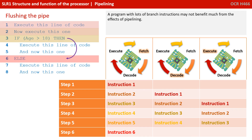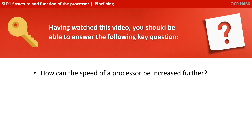While pipelining does improve the efficiency of fetching, decoding, and executing processes, a program which contains lots of branching instructions may not necessarily benefit much from the effects of pipelining. Having watched this video, you should be able to answer the following key question: how can the speed of a processor be increased further?